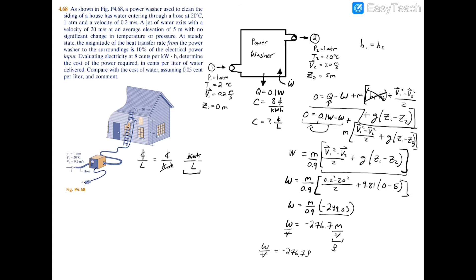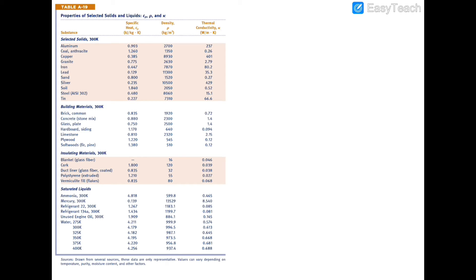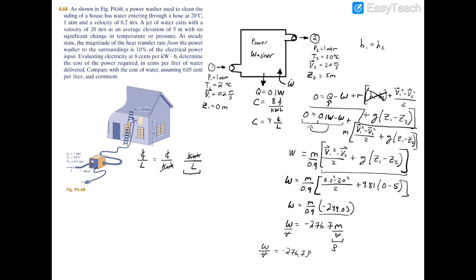To find the density, I'll turn to Table A-19. We're at 20 degrees Celsius throughout the power washer, which equals 293 Kelvin. Interpolating between 273 and 300 Kelvin, the density at T equals 20 degrees Celsius equals 997.45 kilograms per cubic meter.